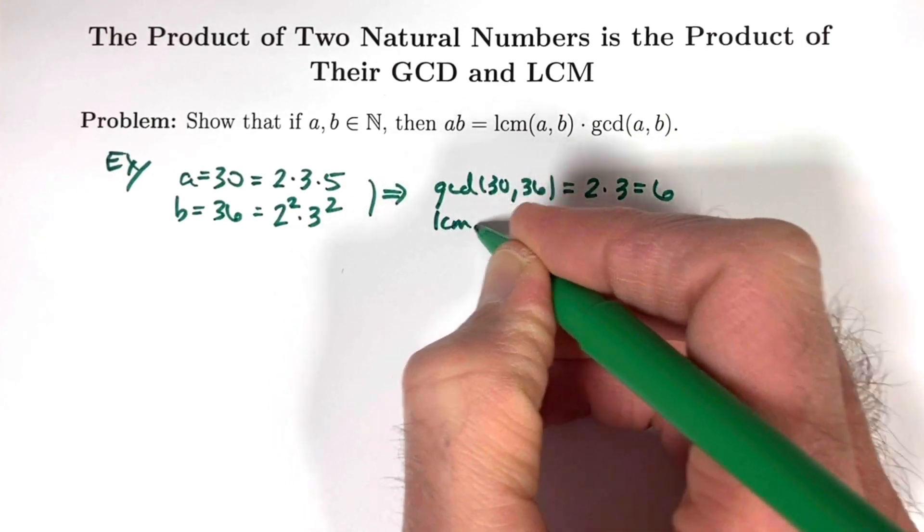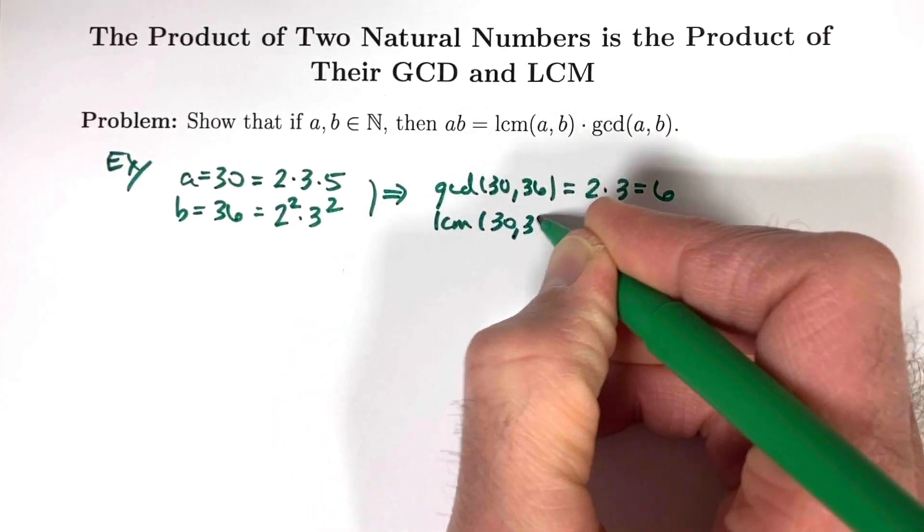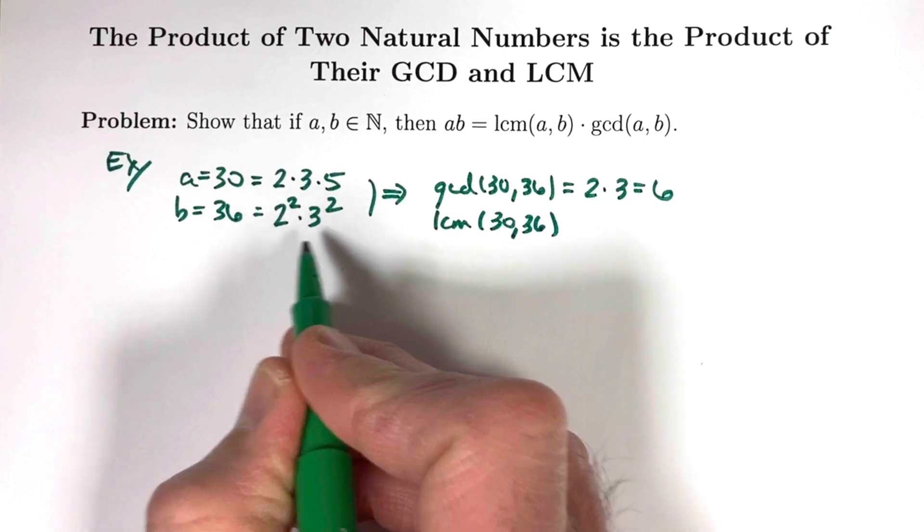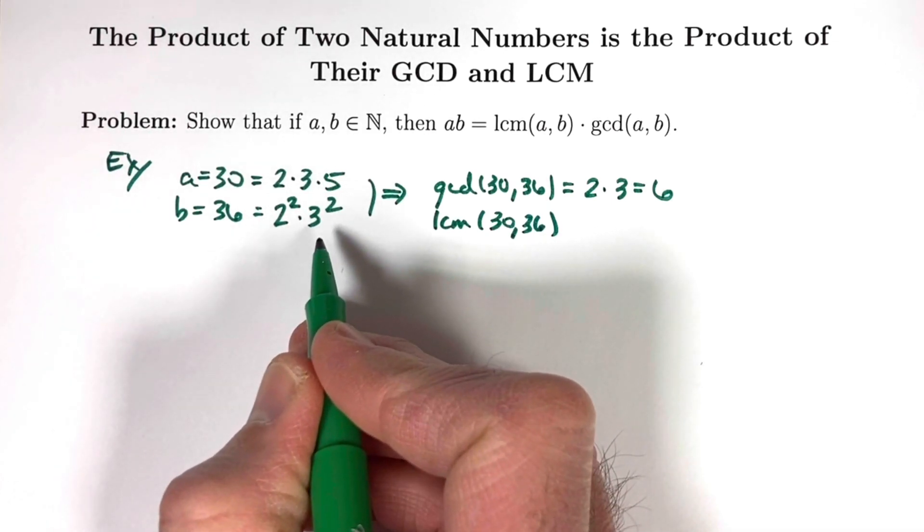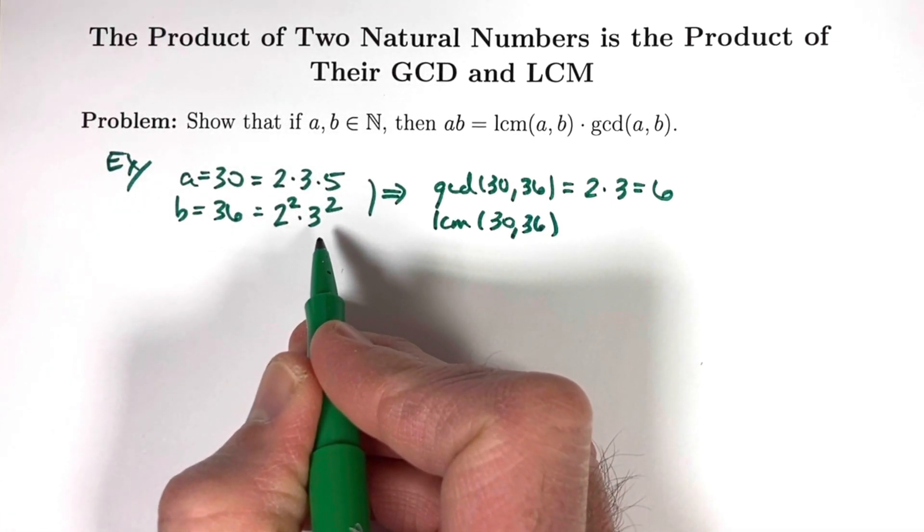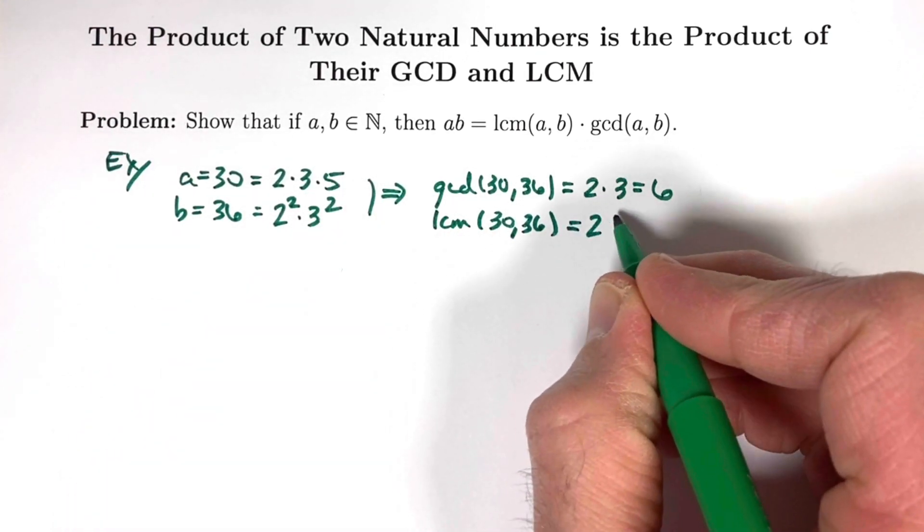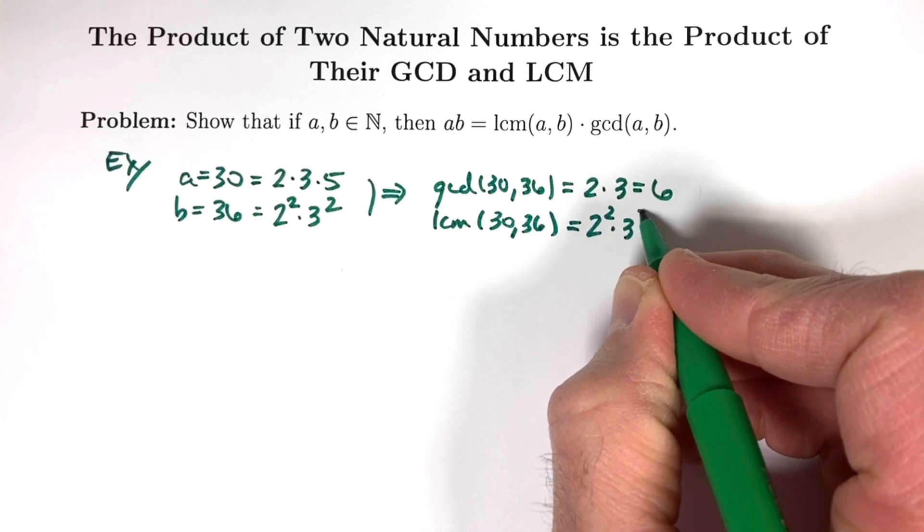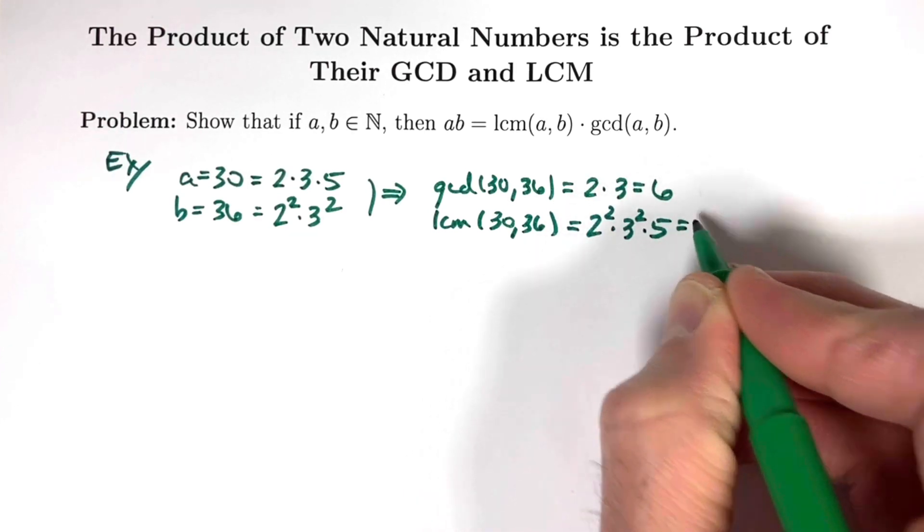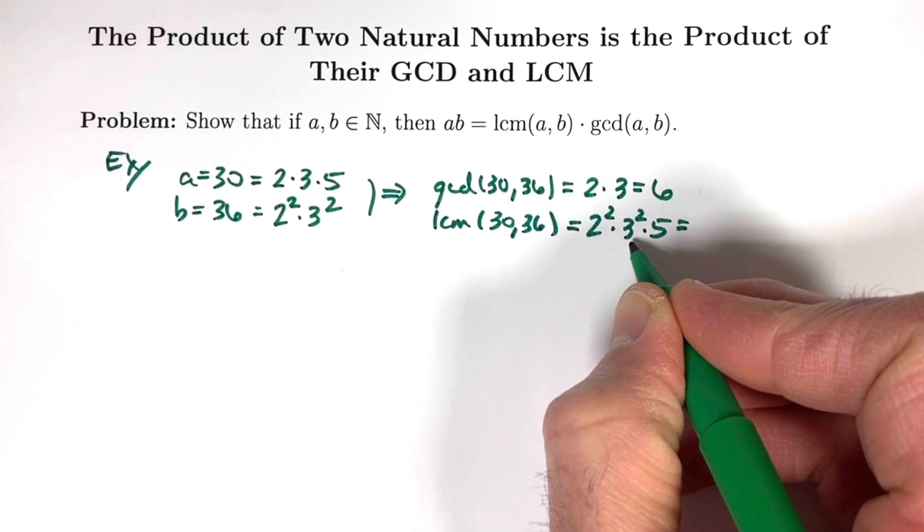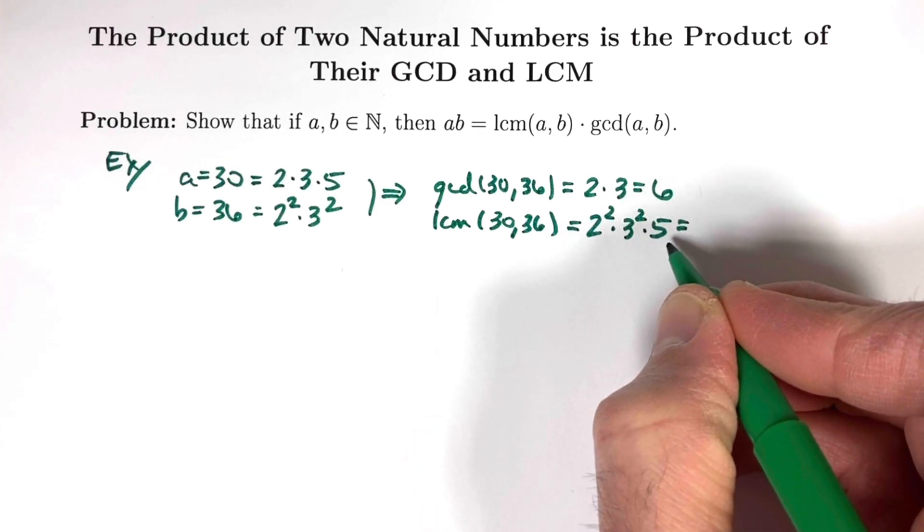How about the LCM of 30 and 36? What we do is we take all the prime factors of both numbers and ask what is the highest power in each case. 2 squared, 3 squared, and 5 form the least common multiple. 2 squared times 3 squared times 5. 2 squared times 3 squared is 36. 36 times 5, you can check, is 180.